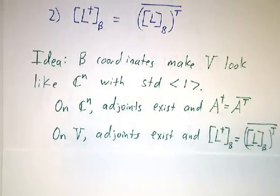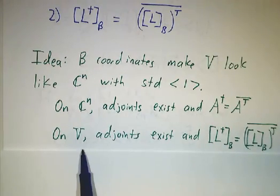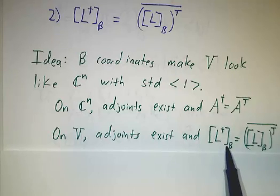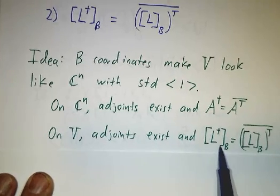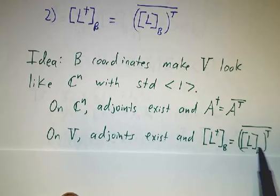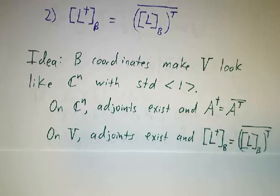So that means that on a vector space, adjoints always exist, and you take the transpose conjugate not of the operator itself, because the operator itself might be derivatives on the space of functions or lord knows what else, but you can take the transpose conjugate of the matrix of the linear transformation, and that will be the matrix of the adjoint. So that's the idea, let's make that more precise.